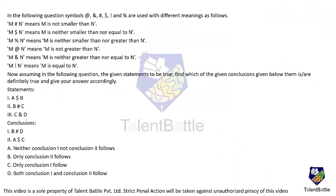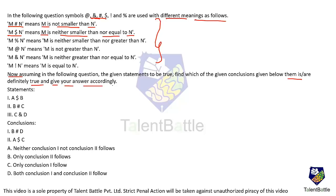In the following question, symbols like 'at the rate' and others are used with different meanings as follows. They gave us the meanings also. For example, m hash n means m is not smaller than n. And m dollar n means m is neither smaller than nor equal to n. Now, assuming the given statements to be true, find which of the given conclusions is definitely true and give your answer accordingly.